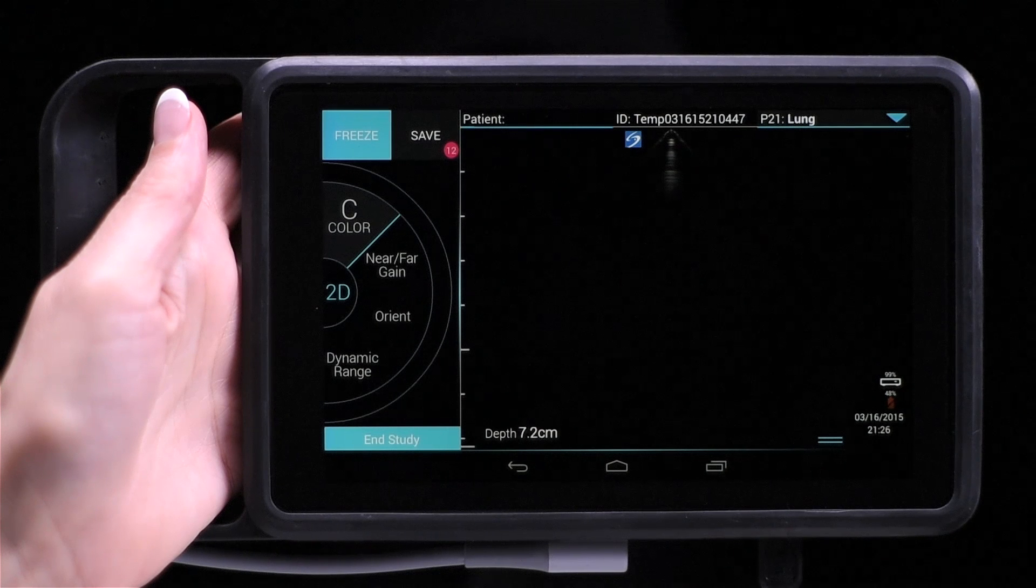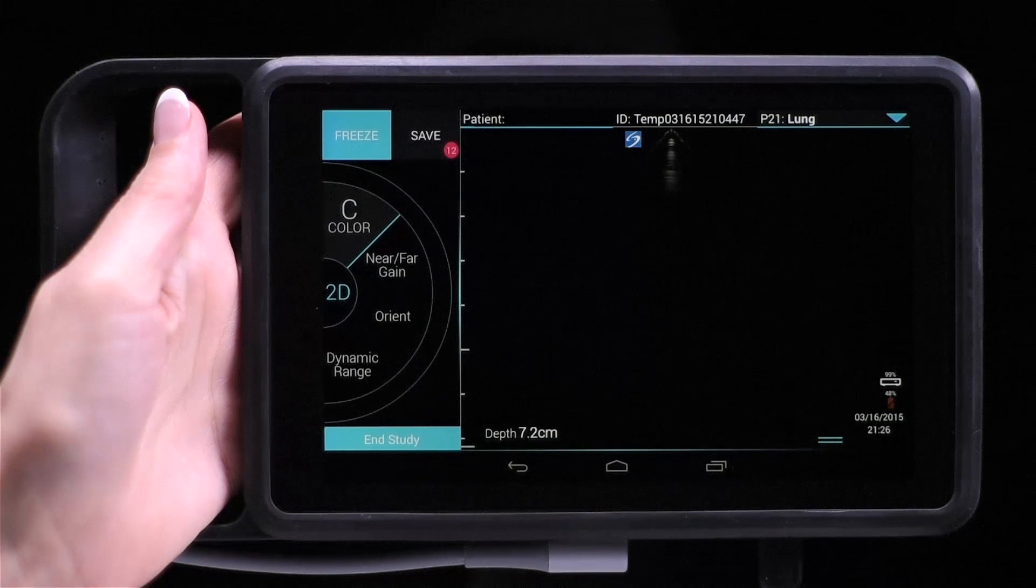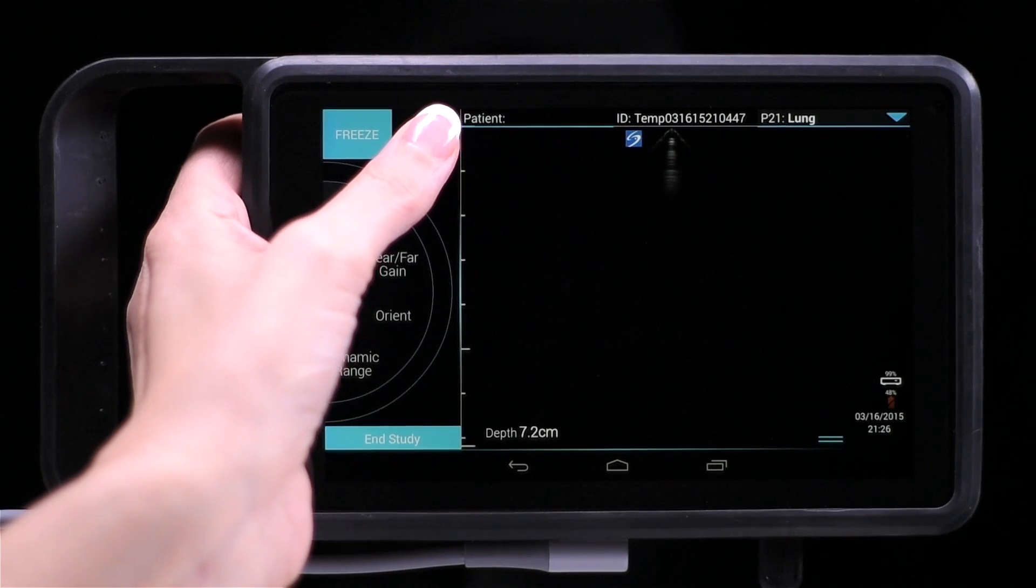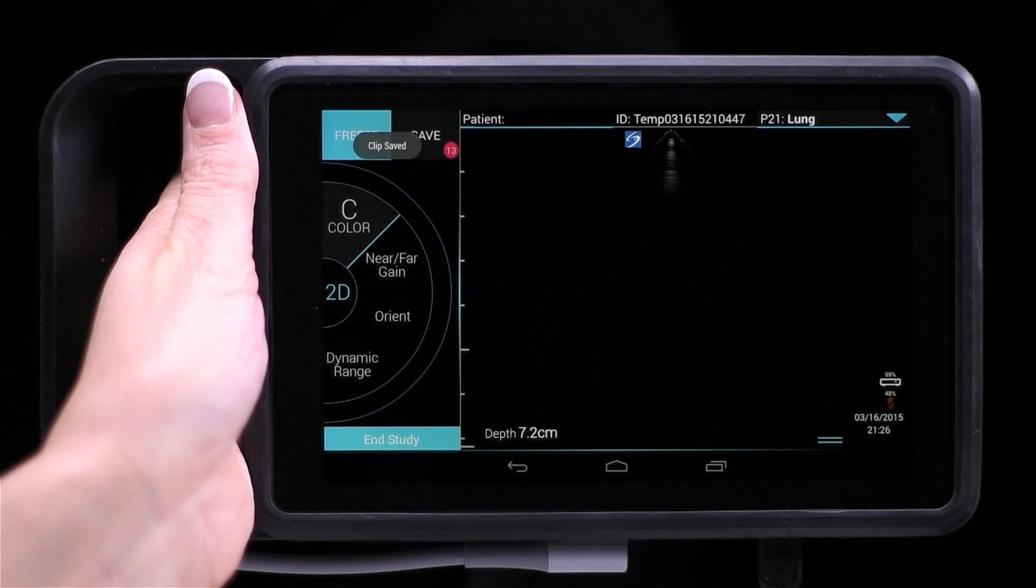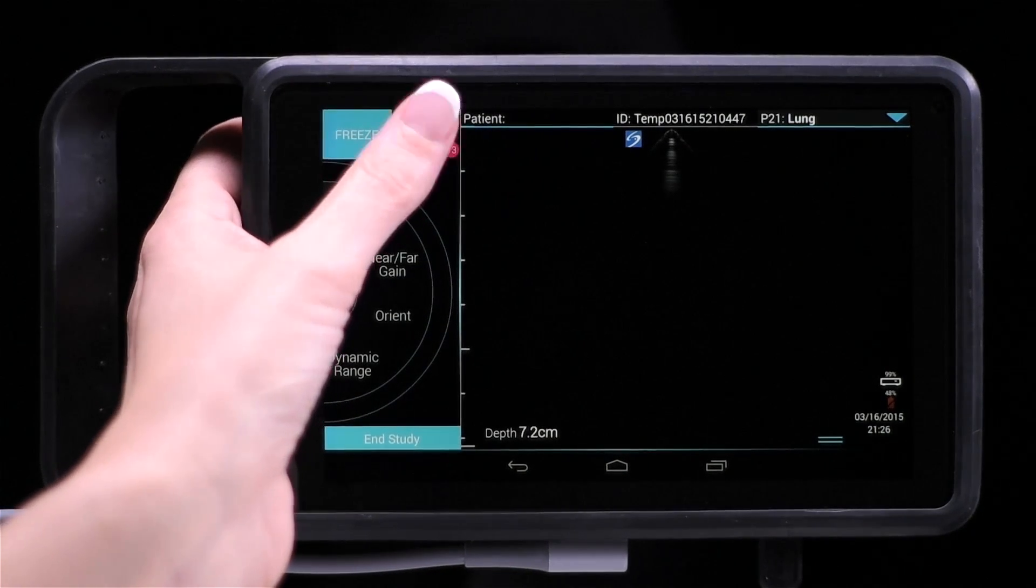Then, when you're scanning, you can press and hold the Save button to record a clip. To save an image, just tap Save.